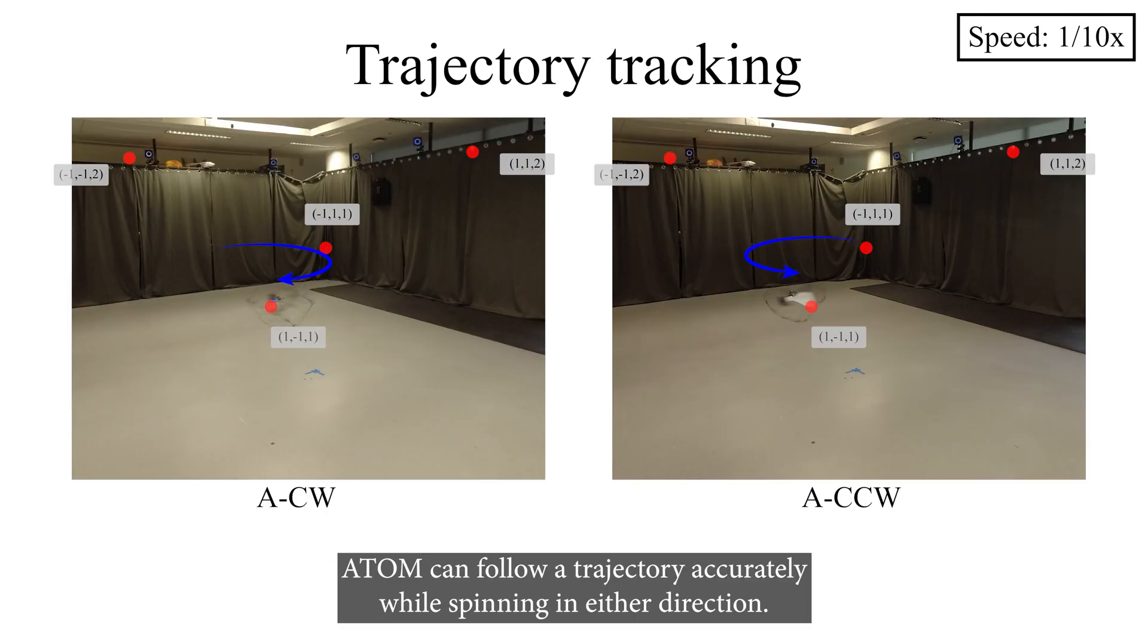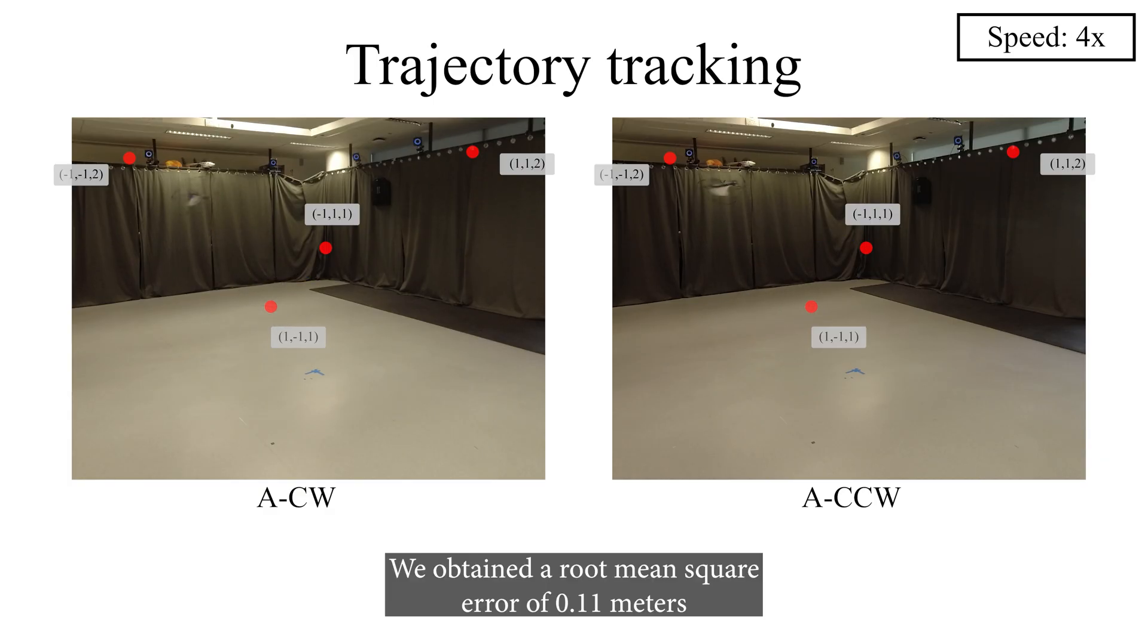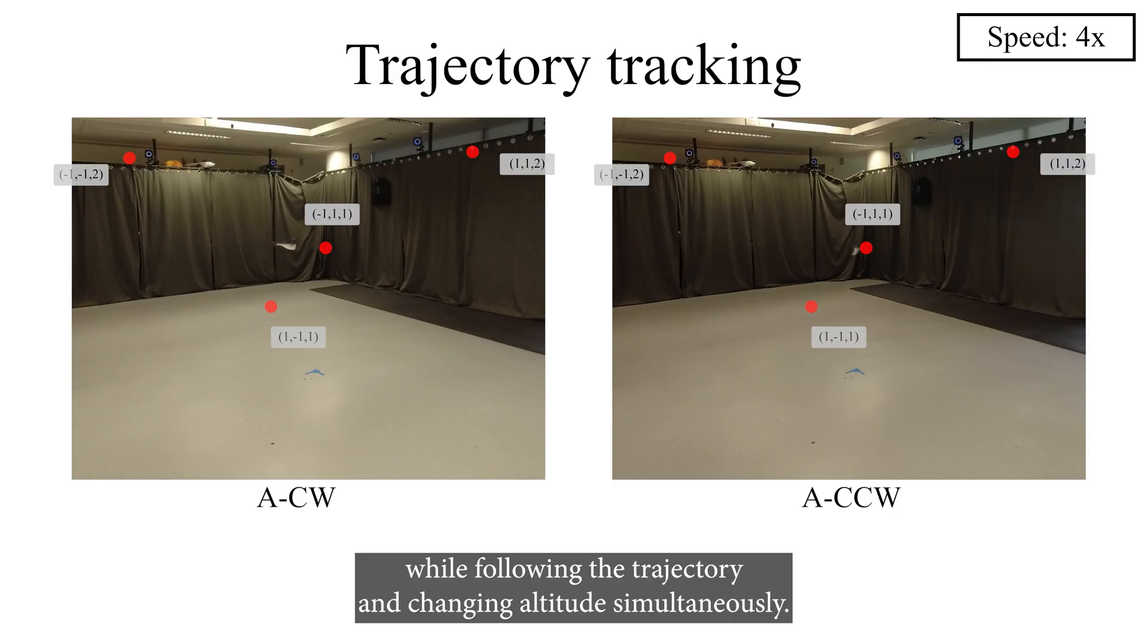Adam can follow a trajectory accurately while spinning in either direction. We obtained a root mean square error of 0.11 meters while following the trajectory and changing altitude simultaneously.